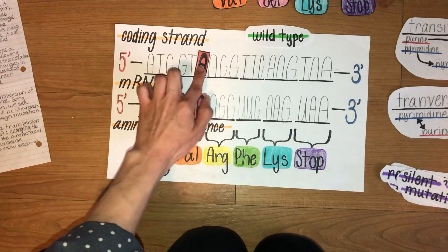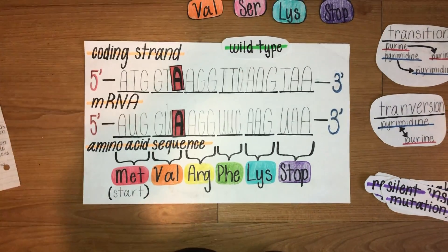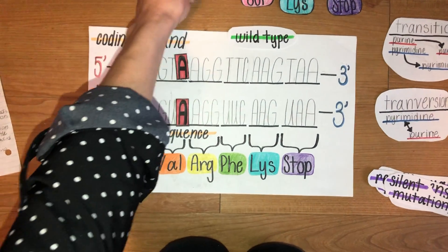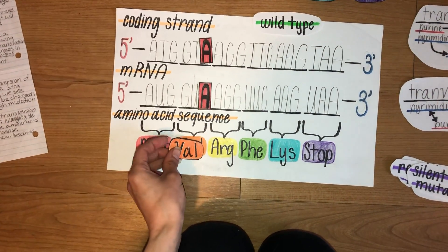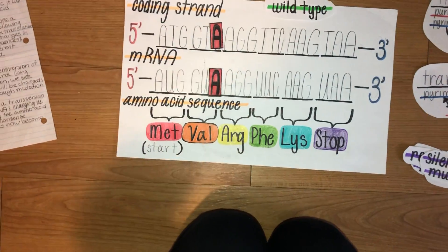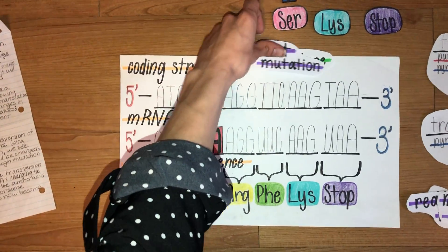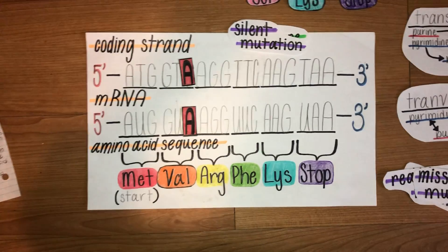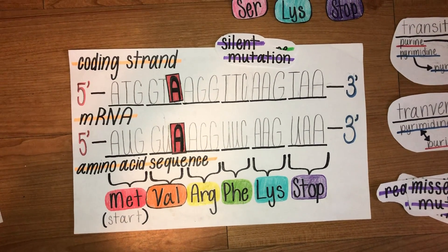Following the process, the change in our coding strand causes the respective change in our mRNA and then our respective change in our amino acid sequence. This is going to be a silent mutation, as the amino acid coded for is the same as it started out with.